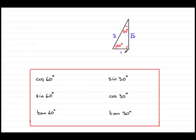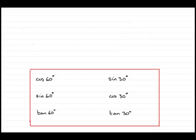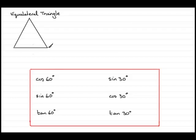The sides are always in the ratio 1 is to 2 is to root 3. But before I get to this stage, I want to take you back to how we get this particular set of ratios. We'll take an equilateral triangle — a triangle with all sides equal.